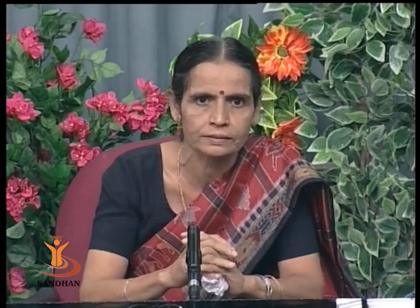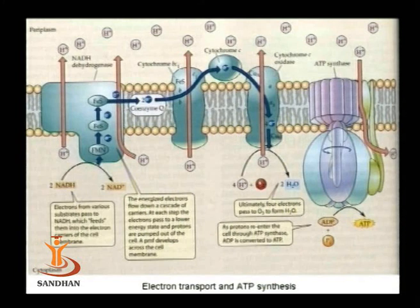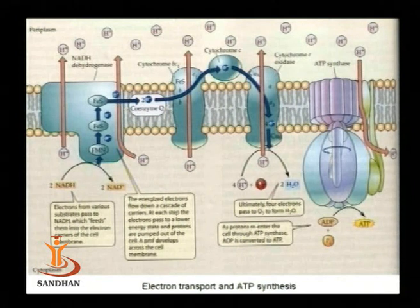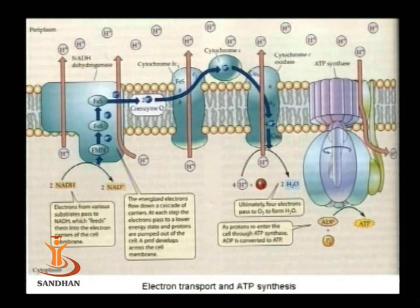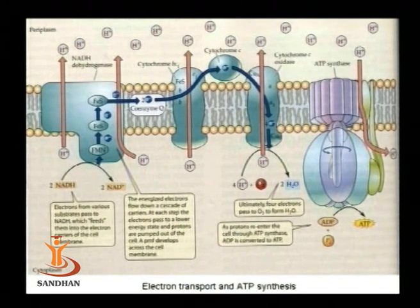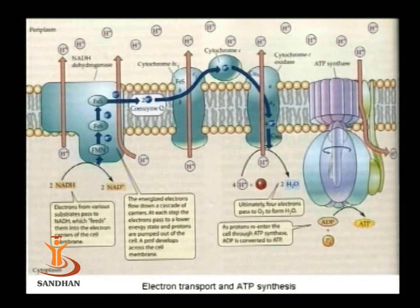Slowly, H⁺ accumulates on the outer side of the membrane, resulting in formation of a proton gradient. This is the typical electron transport chain observed in aerobic bacteria and eukaryotic cells. In the most general case, NADH is the donor of electrons — NADH donates electrons to FAD, FAD to iron-sulfur protein, iron-sulfur proteins to coenzyme Q, coenzyme Q to cytochromes, and then molecular oxygen serves as the final electron acceptor.